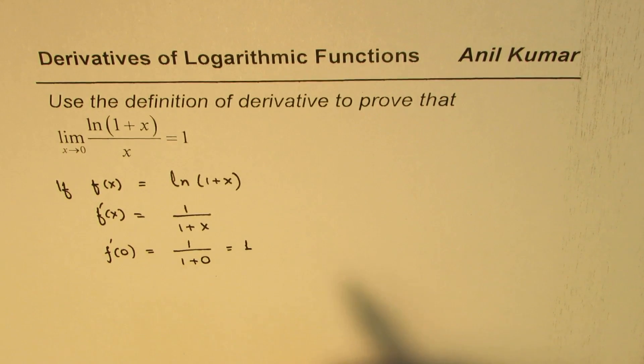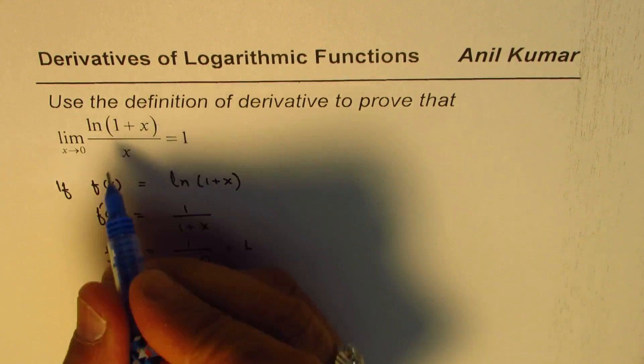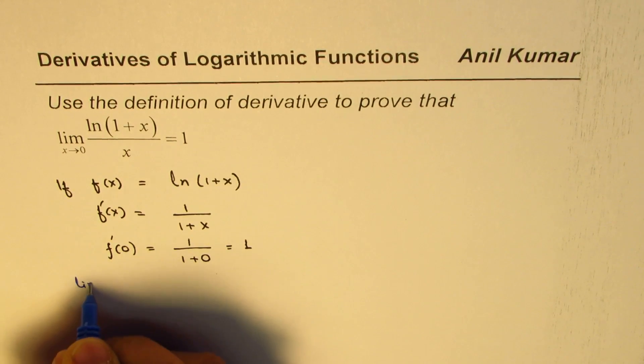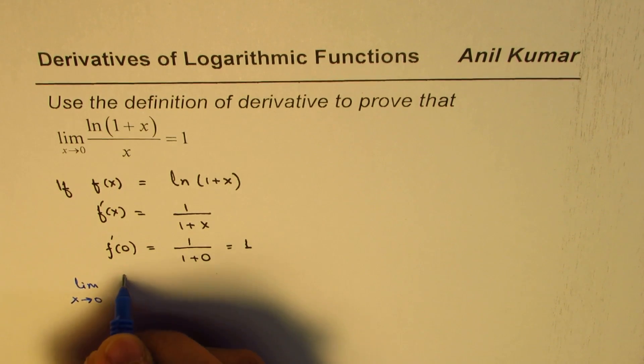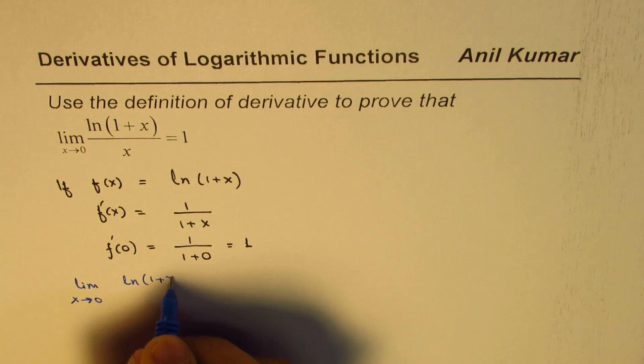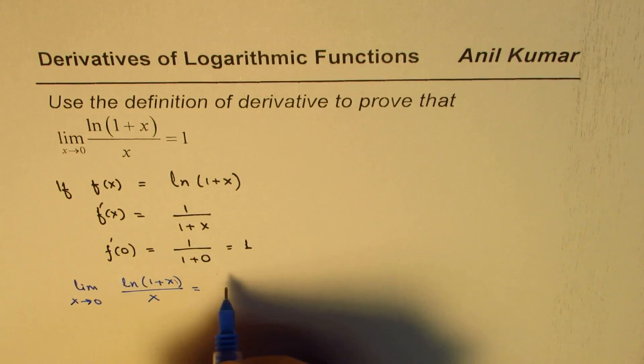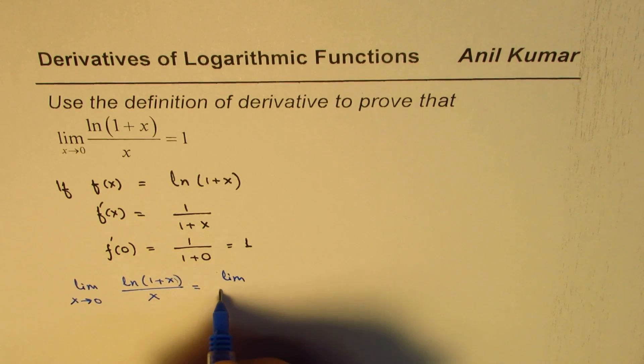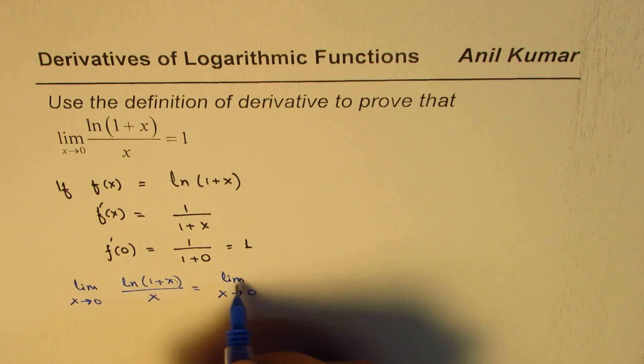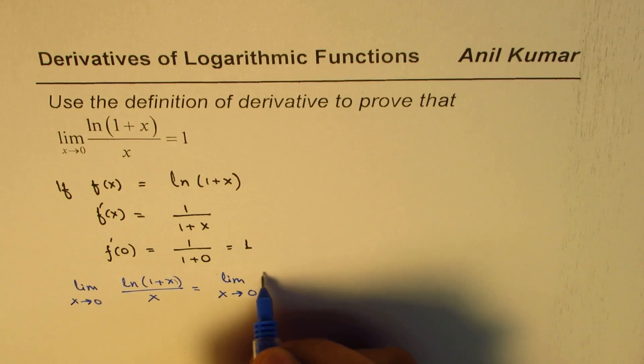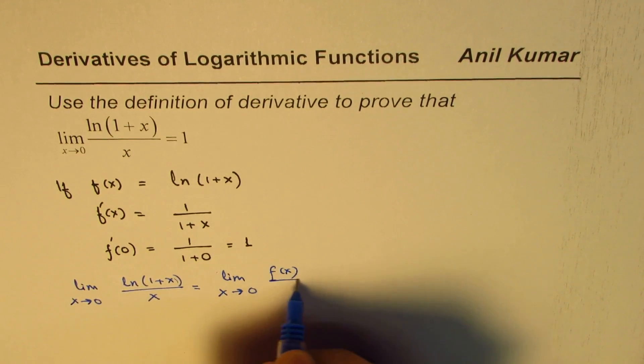So that should help us to answer this question. So we could actually write this limit. Limit x approaches 0 for ln(1+x) over x as equals to, this is our function, so we said limit x approaches 0 for the function f(x) over x.